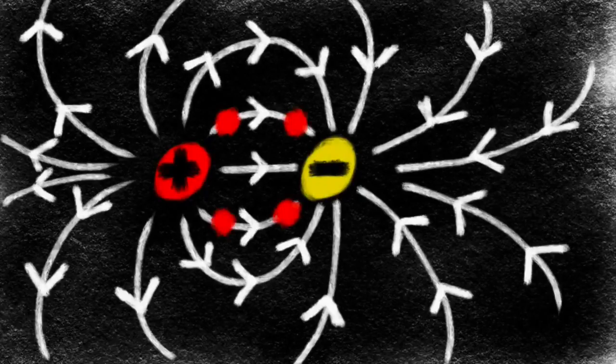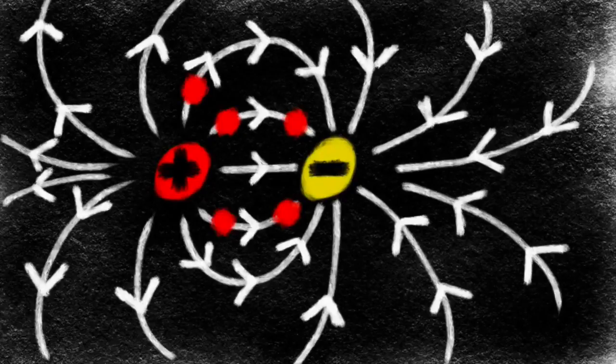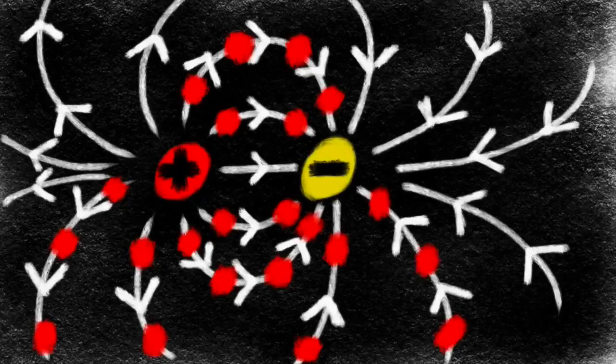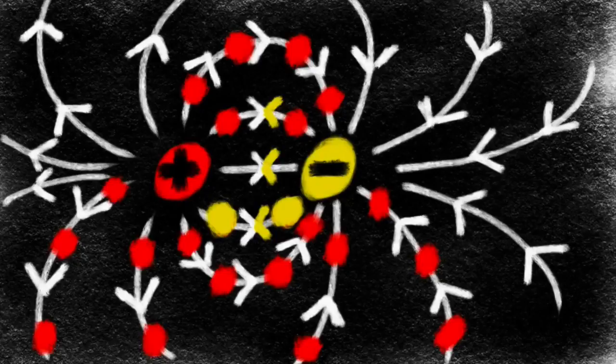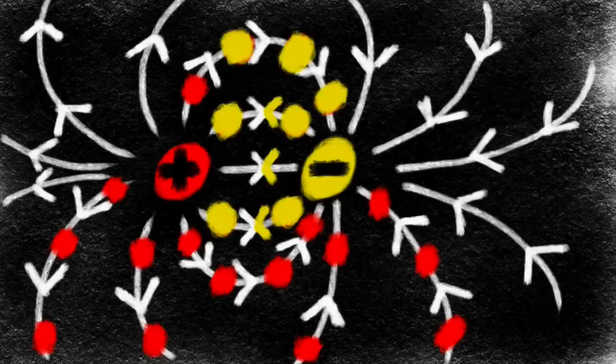So the positive charges will move in these directions with the white arrows. You can also think about what would happen if you had a negative charge that was starting off near the large yellow dot. Negative charges would go the opposite direction. They're going to be attracted to the positive and repelled from the negative. So they're going to do the opposite.